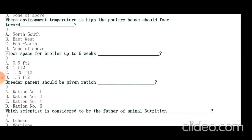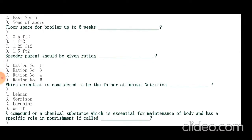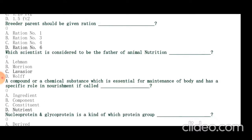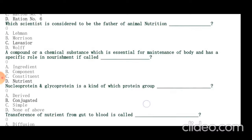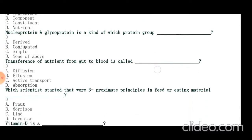Breeder parent should be given ration number 6. The scientist considered to be the father of animal nutrition is Lavoisier. The compound or chemical substance which is essential for maintenance of body and has a scientific role in nourishment is called nutrient. Nucleoprotein and glycoproteins are conjugated proteins. Transference of nutrients from gut to blood is called absorption. Proust was a scientist who stated there are three approximate principles in feed or eating material.